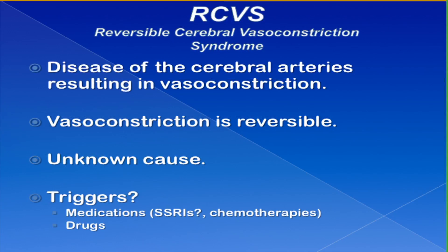Reversible cerebral vasoconstriction syndrome is a disease we are now understanding more and more, having really emerged over the last 10 years. It's a condition where cerebral arteries undergo sudden vasoconstriction for reasons that aren't quite clear, and over the next several weeks it reverses and normalizes. Triggers are unknown, but serotonin uptake inhibitors, some chemotherapies, and vasoactive drugs such as cocaine or amphetamines may trigger it.